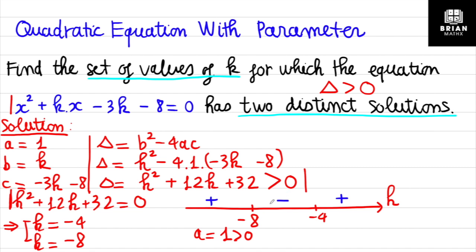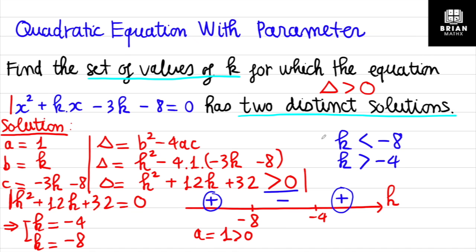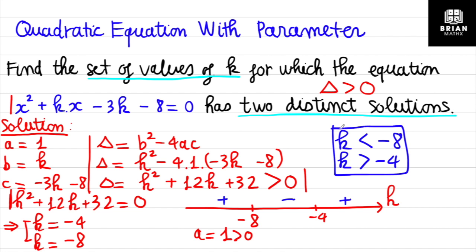We care about where the expression is greater than zero, which is the two outer regions. The left region gives k < −8 and the right region gives k > −4. So the set of values of k for which the equation has two distinct solutions is k < −8 or k > −4.